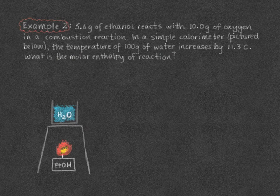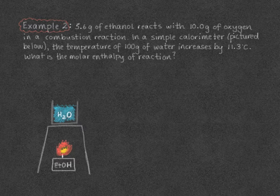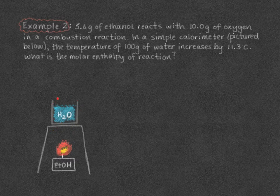Our second example: 5.6 grams of ethanol reacts with 10 grams of oxygen in a combustion reaction. In a simple calorimeter, pictured below, the temperature of 100 grams of water increases by 11.3 degrees. What is the molar enthalpy of reaction? In this calorimeter, the ethanol burns below the water, and the heat from combustion rises and heats the water in a metal container. We'll do the analysis the same way — starting with a balanced chemical reaction.